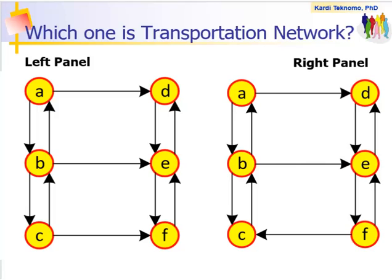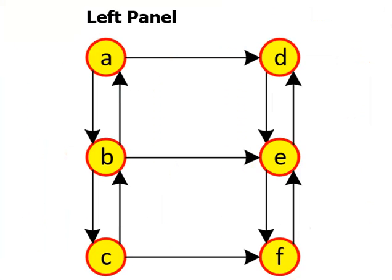Let us see the left network. Where is home in this case? If your home is either in node A, B, or C, you can go to node D, E, or F, but you cannot go home. A network that is incapable to bring you home is not a transportation network.